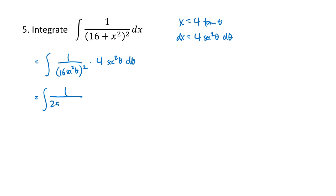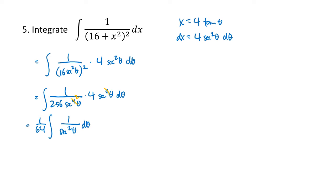We get 1 over 256 secant to the fourth of theta, times 4 secant squared of theta. Four over 256 simplifies to 1 over 64. We've got 2 copies of secant on the top and 4 copies on the bottom, leaving 2 copies on the bottom. One over secant squared is cosine squared of theta. We again need half-angle formulas, so we rewrite cosine squared of theta as one half times 1 plus cosine of 2 theta, pulling that one half out of the integral.